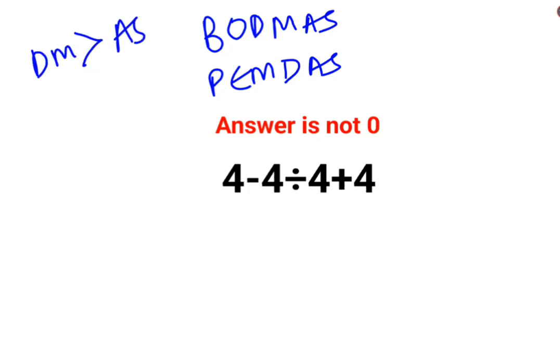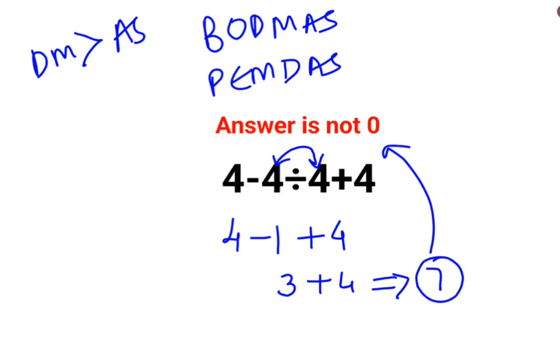So the first operation which you should do in this sum is 4 divided by 4. So 4 minus 4 divided by 4 is 4 minus 1, plus 4. So 4 minus 1 is 3 plus 4. The answer for this question is supposed to be 7. I hope this is very clear to everyone.